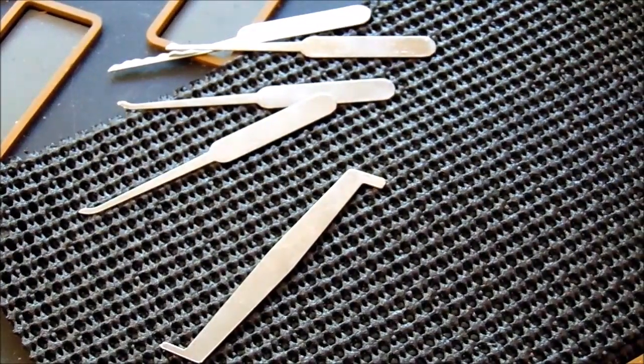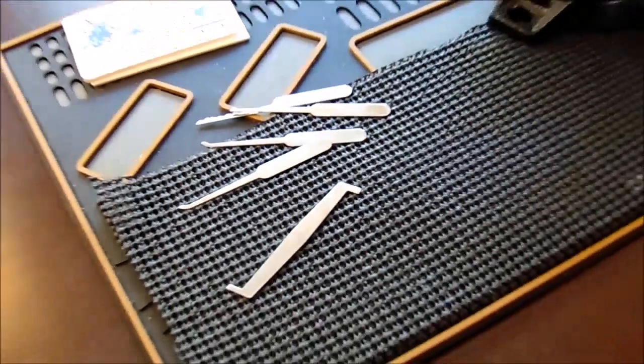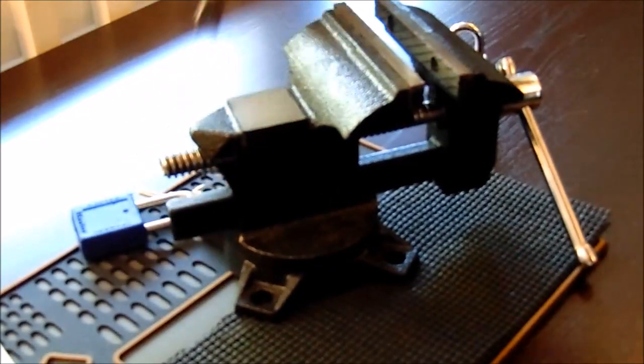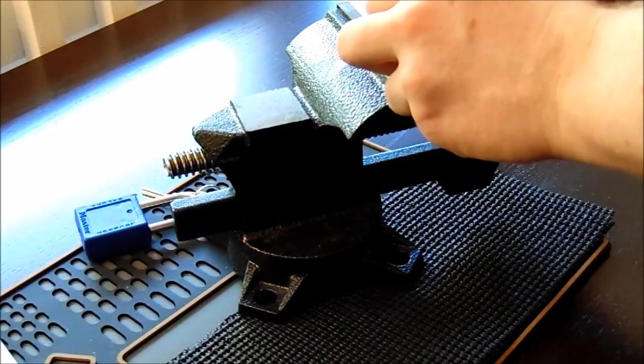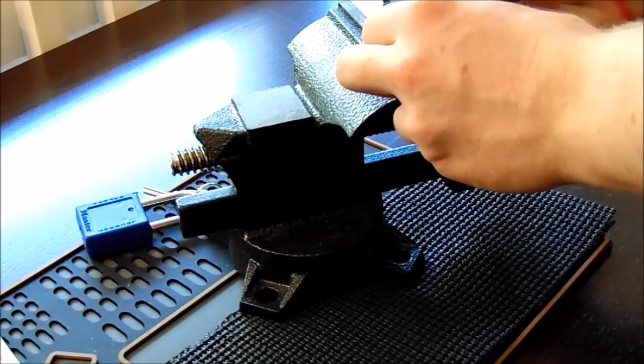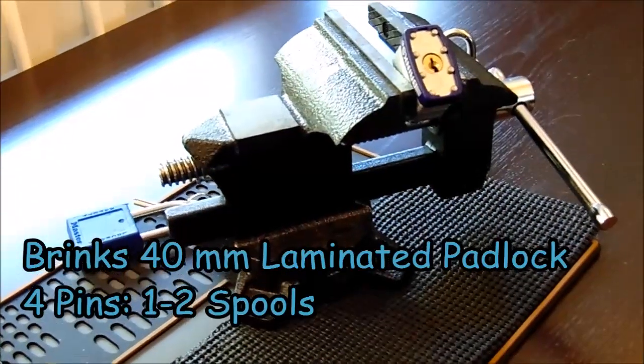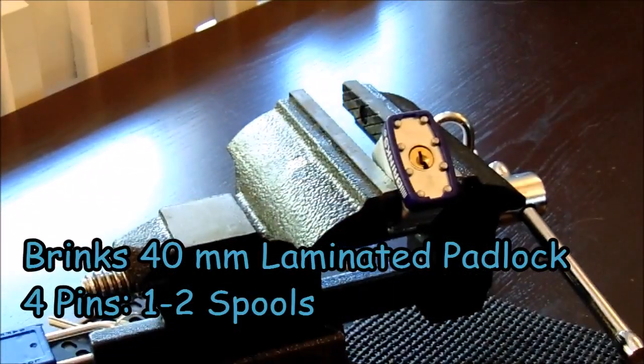The first one I'm going to do is going to be my Brinks 40 millimeter laminated padlock and I'm just going to get that loaded up in the vise now and then after that we're going to do the Master Lock 570, a Master Lock 410 lockout tagout, and then a Commando Marine padlock.